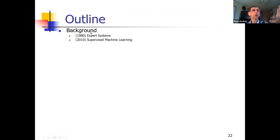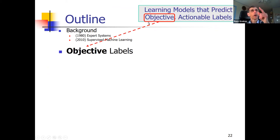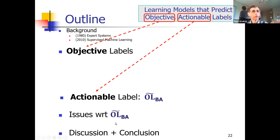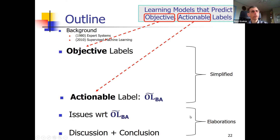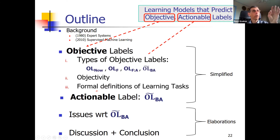Outlining my talk: I gave motivation from 40 years ago through modern times. I talked about learning models that are objective and actionable. I'm going to talk about some issues — first what it means to be objective, with some subtleties, and then a lot about being actionable. I'll give a formal definition of the tasks before going to the third and fourth task types.